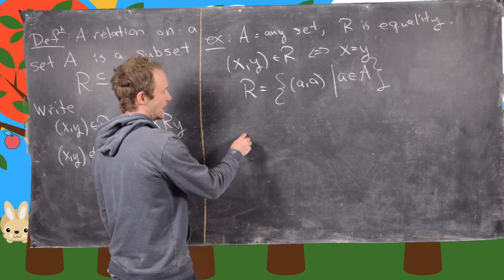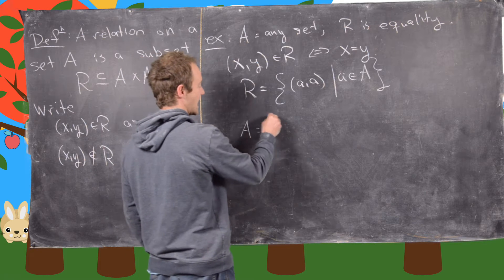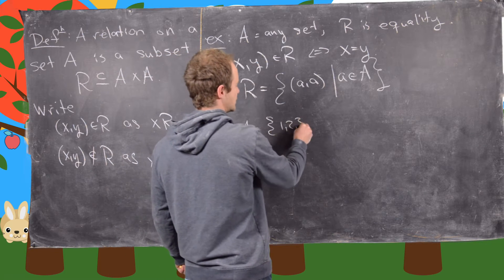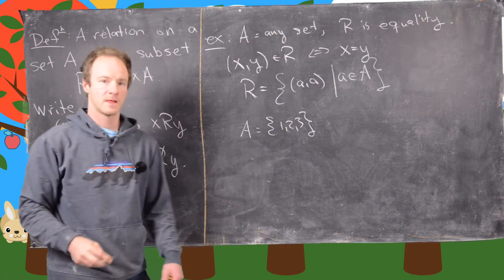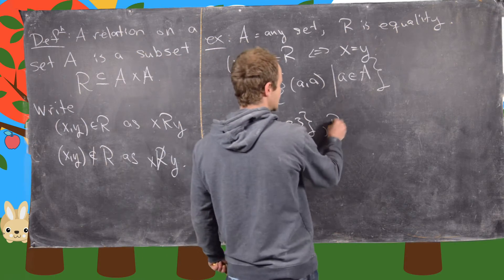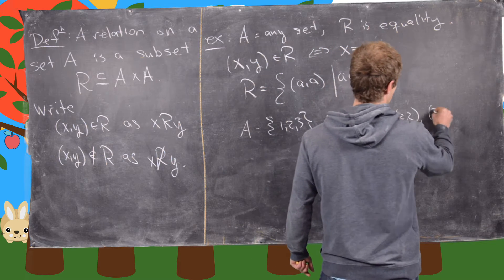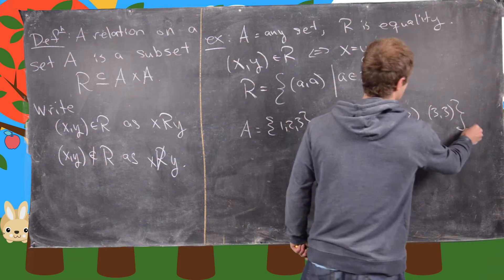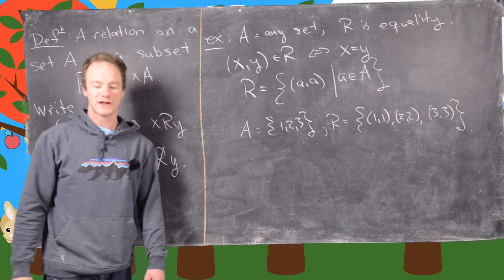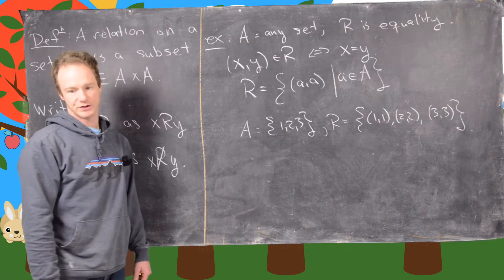So further into this example, if we let A equal the set 1, 2, 3, then our relation in this case is just 1 comma 1, 2 comma 2, and 3 comma 3. So in other words, elements are only related if they are equal to each other.